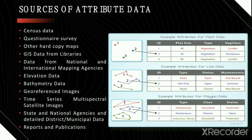Now let's look into the sources of attribute data. There are various sources: census data, questionnaire surveys, hard copy maps other than analog and digital maps, GIS data from libraries, data from national and international mapping agencies, elevation data, bathymetry data, geo-referenced images, time-series multi-spectral satellite images, satellite state and national agencies, detailed district and municipal data, and reports and publications of various organizations and magazines.